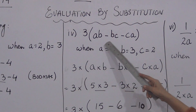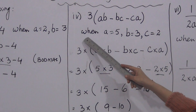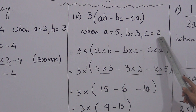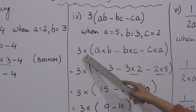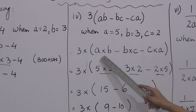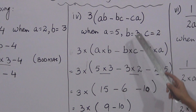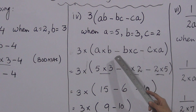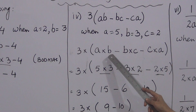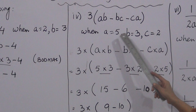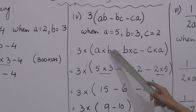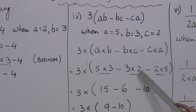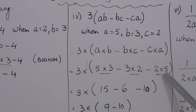The values given are: a is equal to 5, b is equal to 3, and c is equal to 2. First we have to expand the expression: 3 and the bracket contents are multiplied. Between a and b there is no operator so multiply sign comes, between b and c multiply sign comes, between c and a multiply sign comes. Now substitute the values — write 5 in place of a, 3 in place of b, 2 in place of c.